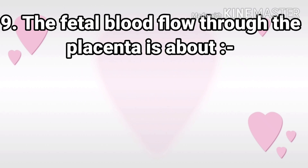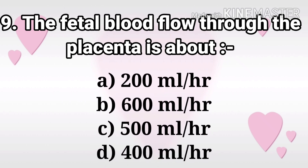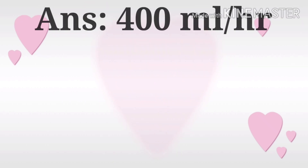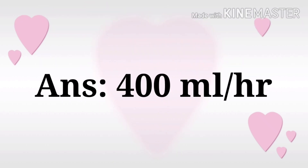Next question: The fetal blood flow through the placenta is about? The options are 200 ml per hour, 600 ml per hour, 500 ml per hour, and 400 ml per hour. The answer is 400 ml per hour.